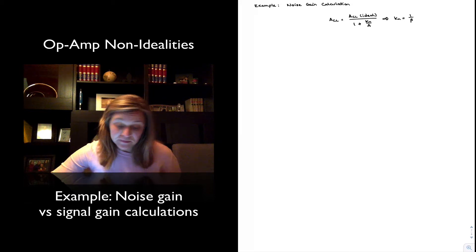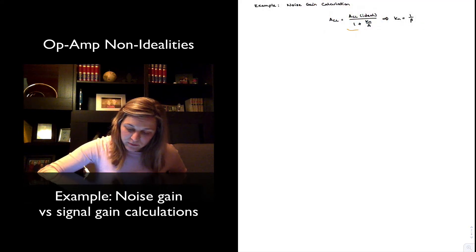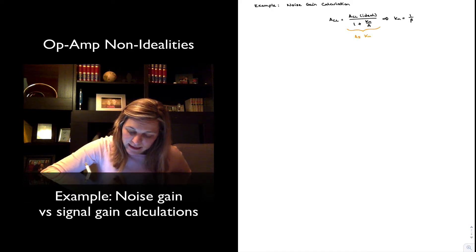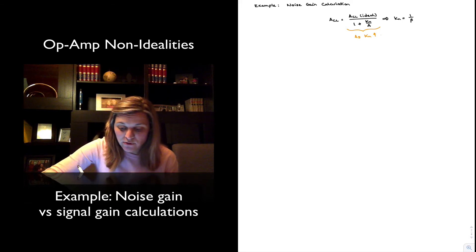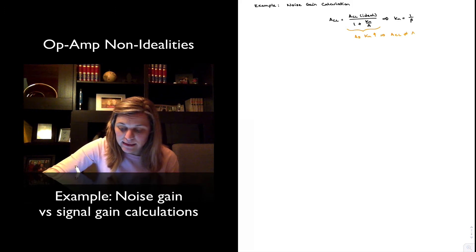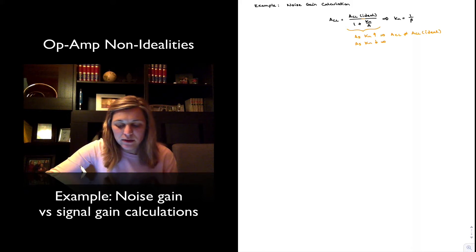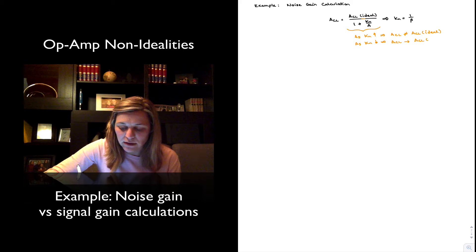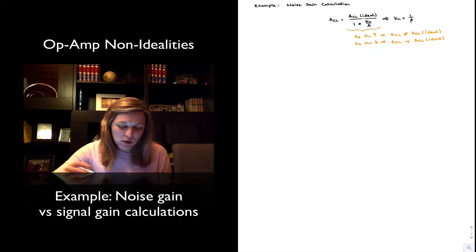Looking at this expression, we can see how as the noise gain increases, the quantity in the denominator will increase, and therefore ACL will be further from the ideal ACL. And as the noise gain decreases, the quantity in the denominator will be closer to one, and ACL will then be trending towards the ideal value of the closed-loop gain, which should make intuitive sense.